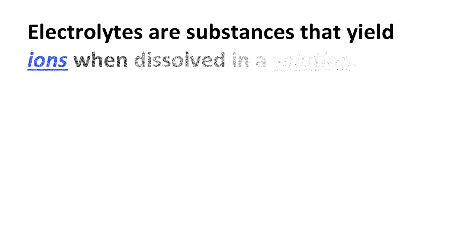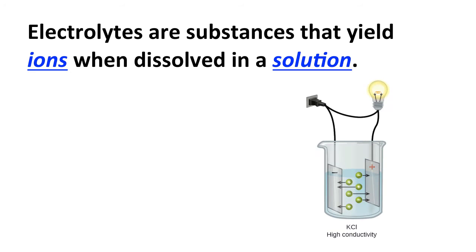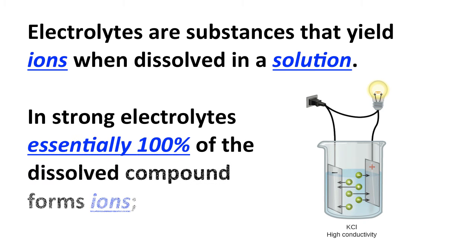So first of all, what are electrolytes? Electrolytes are substances that yield ions when dissolved in the solution. An example of this is potassium chloride dissolved in water. Potassium chloride dissolves well in water. It produces positive potassium ions and negative chloride ions, and that solution conducts electricity quite well because of these charged particles. It has a high conductivity, and this is an example of what is known as a strong electrolyte.